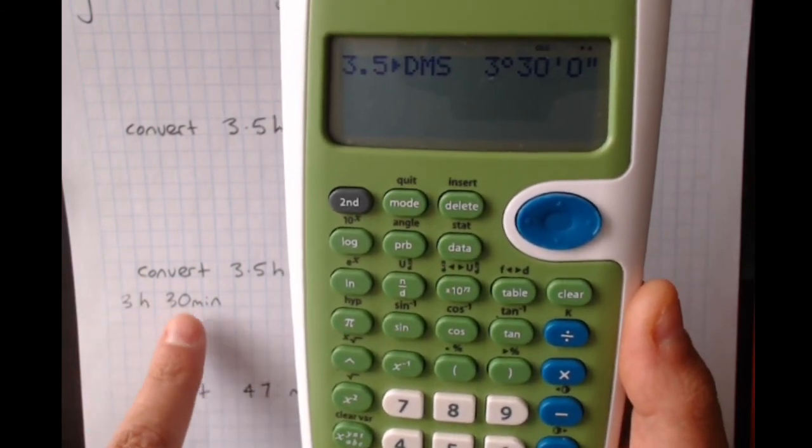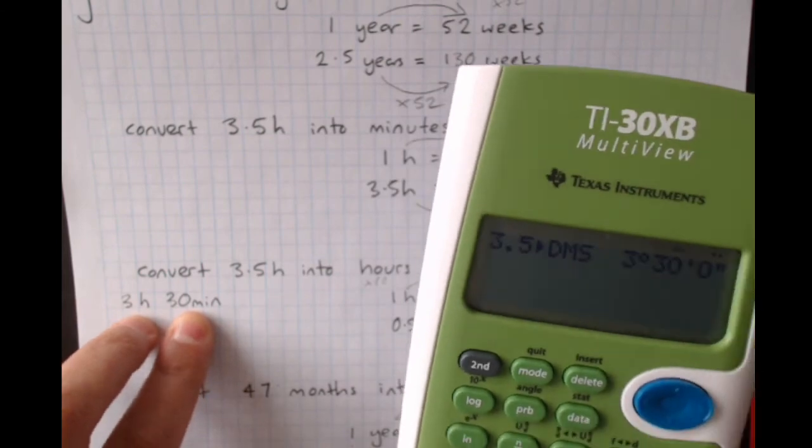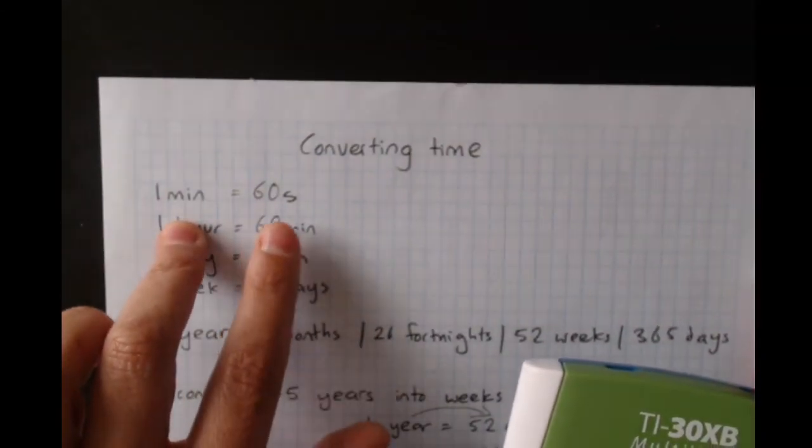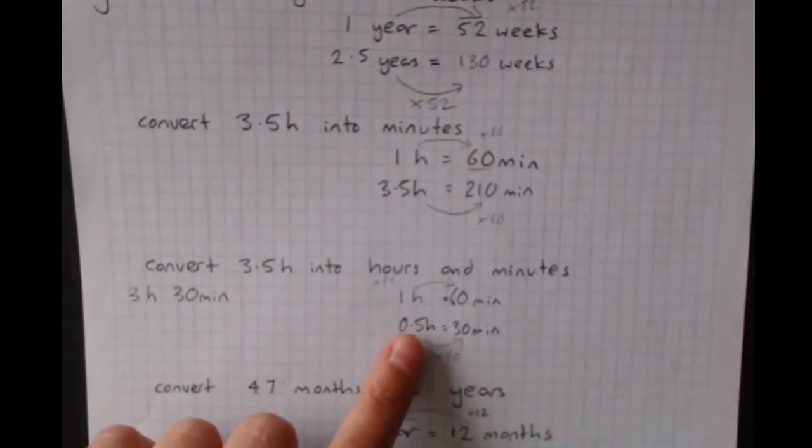Three hours, 30 minutes. And it works for anything that's got the 60 relationship. So it works for going hours to minutes, and minutes to seconds. So it's a little extra sneaky one. But you can always just do your working.